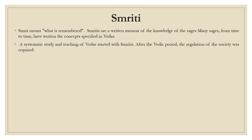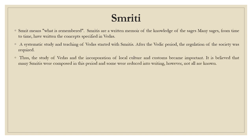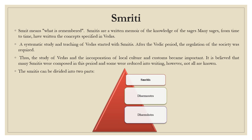After the Vedic period, the regulation of society was required. Thus, the study of Vedas and the incorporation of local culture and custom became important. It is believed that many smritis were composed in this period, and some were reduced in writing. However, not all are known. Thus, smriti can be divided into two parts: the first one is Dharmasutra, and second one is Dharmashastra.